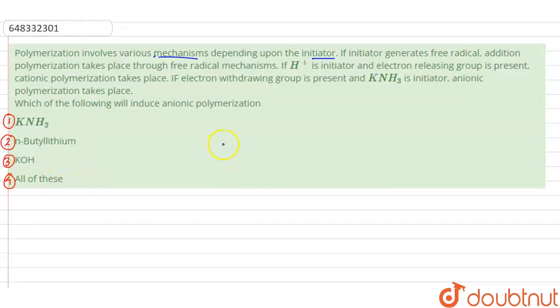As we know that in anionic polymerization, initiator mechanism follows that initiator should be electron donating. So what we can write here: in anionic polymerization, initiator should be electron donating.